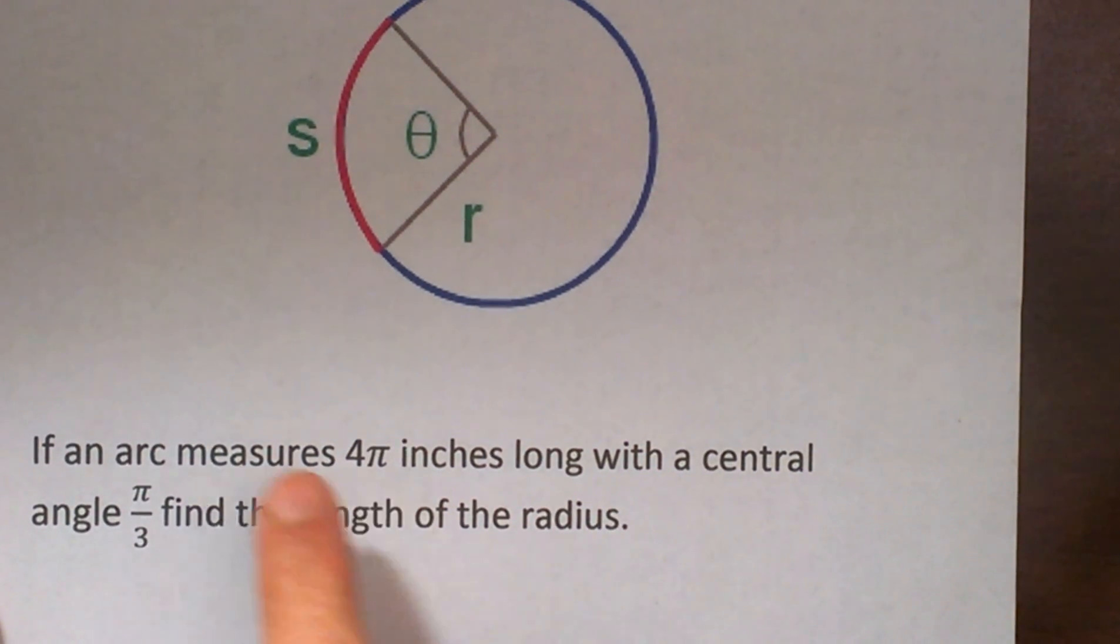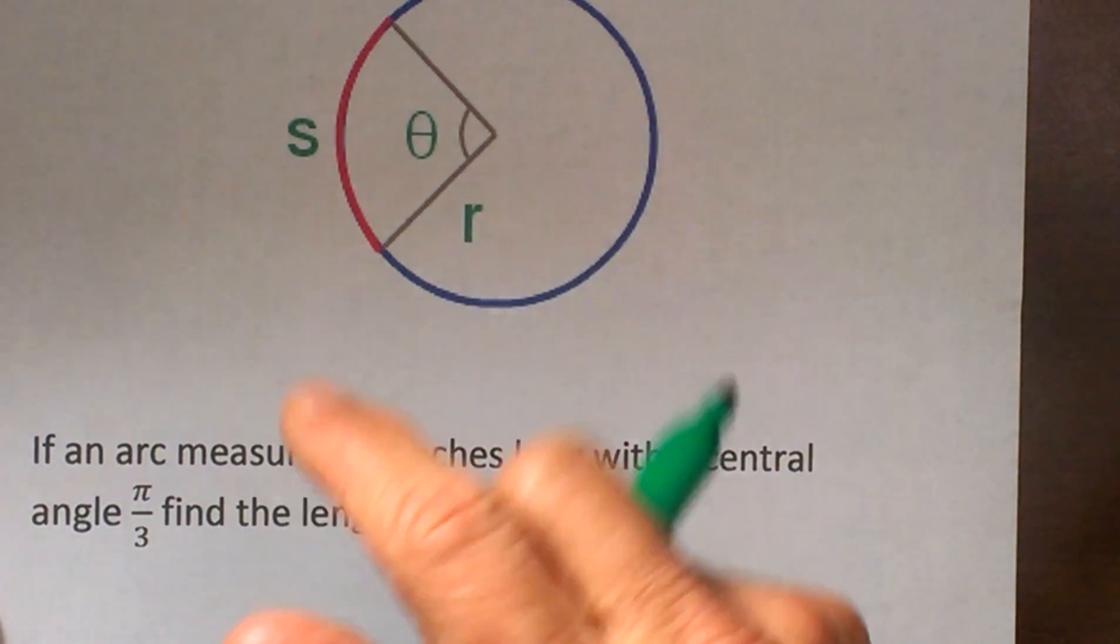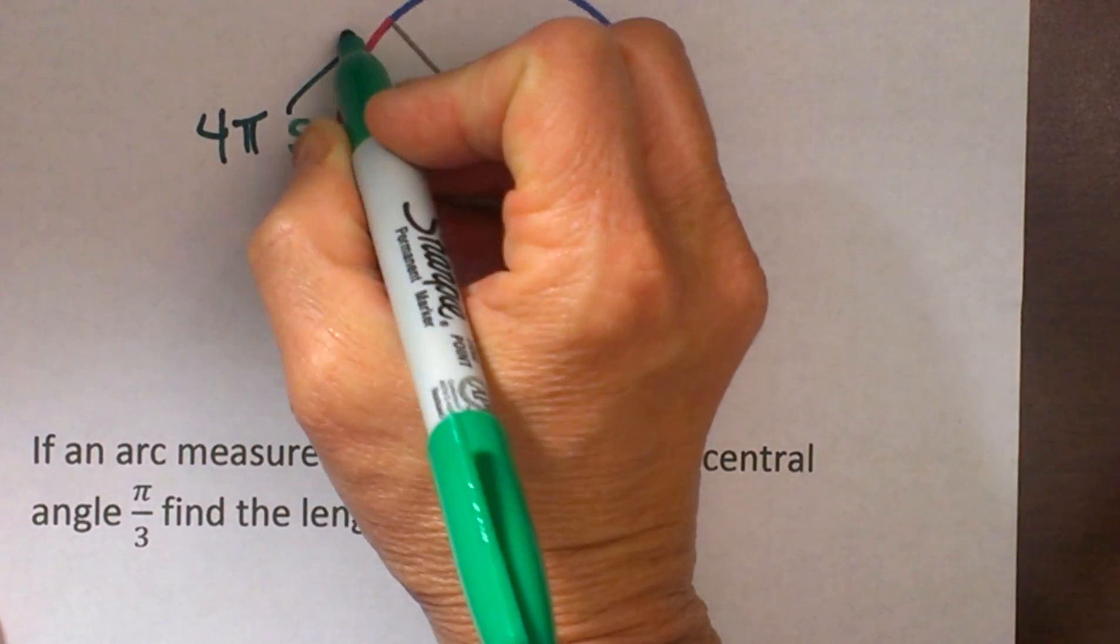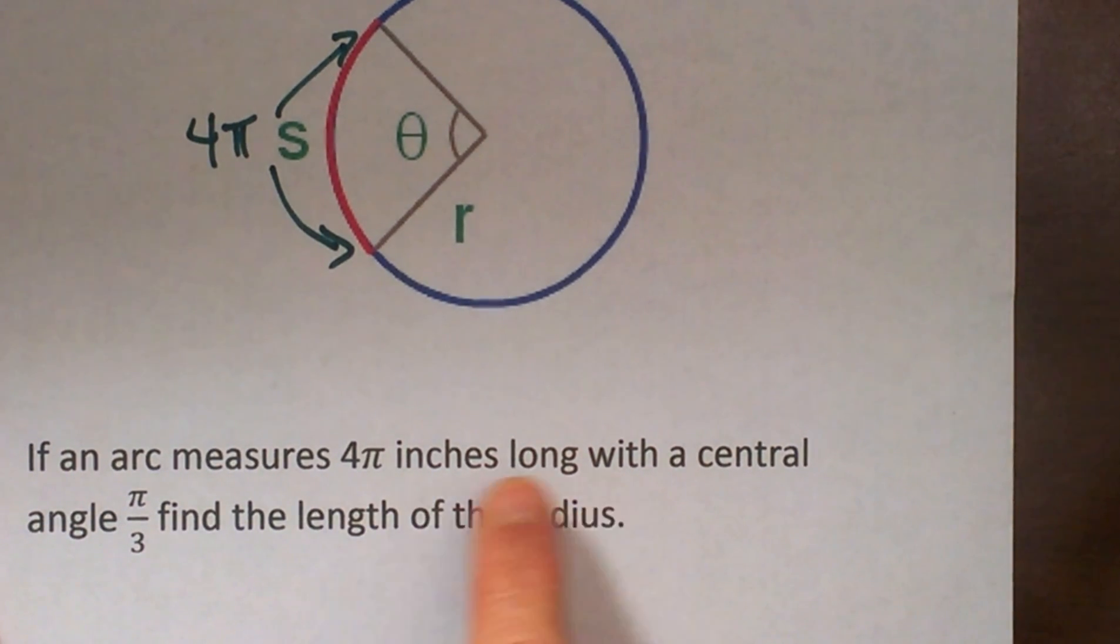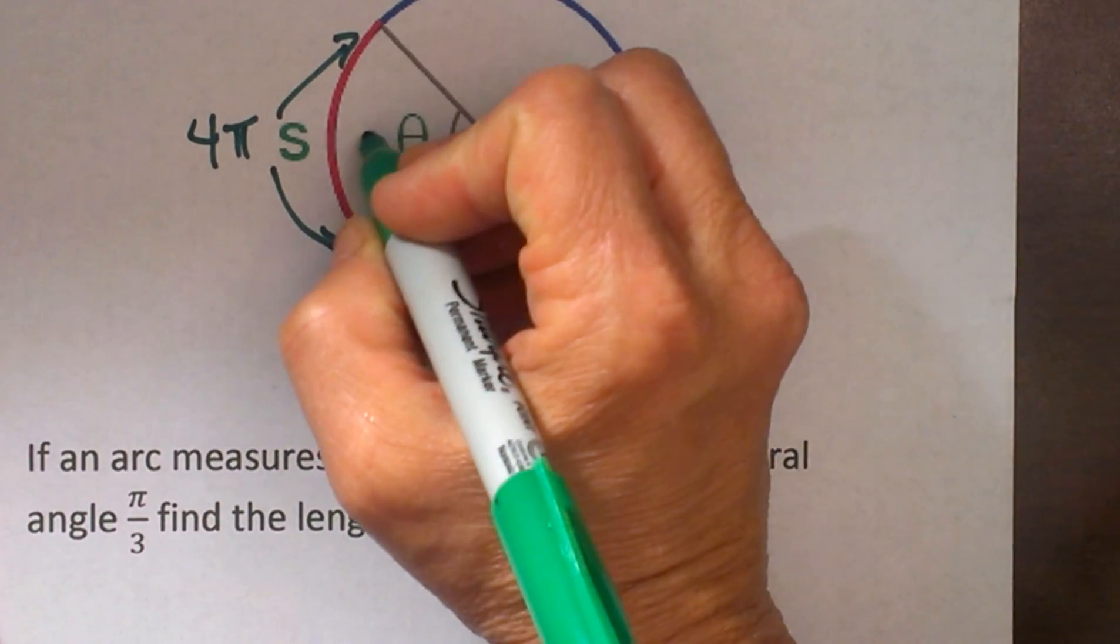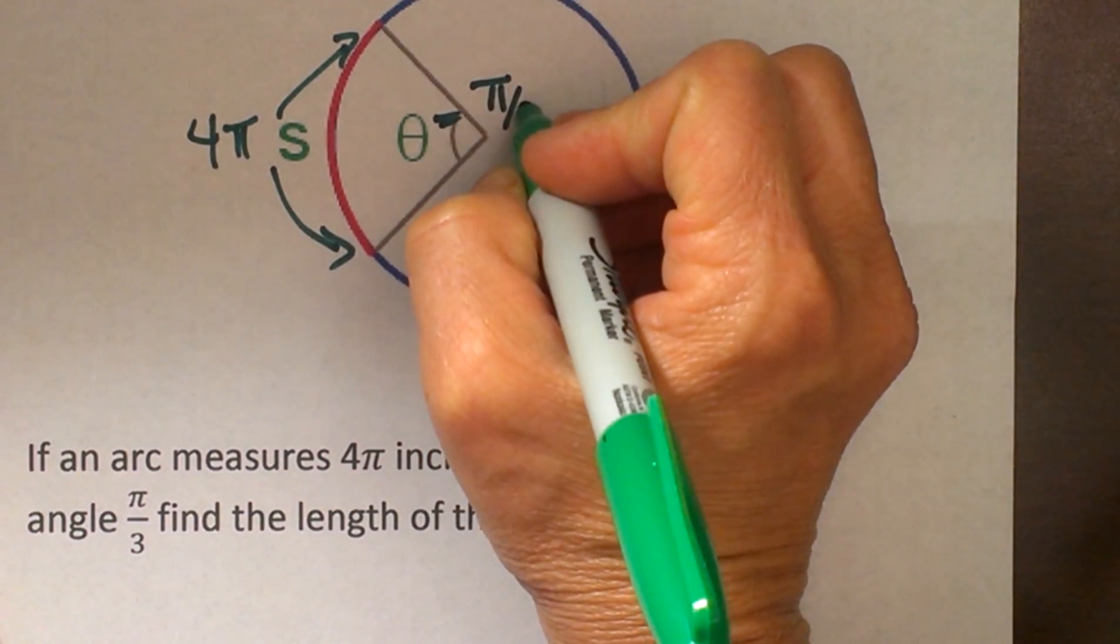Now let's use that formula in this problem. If an arc length measures 4π, the fraction of the circle is only 4π inches long with a central angle of π/3. This is in radian measure so our angle is π over 3.